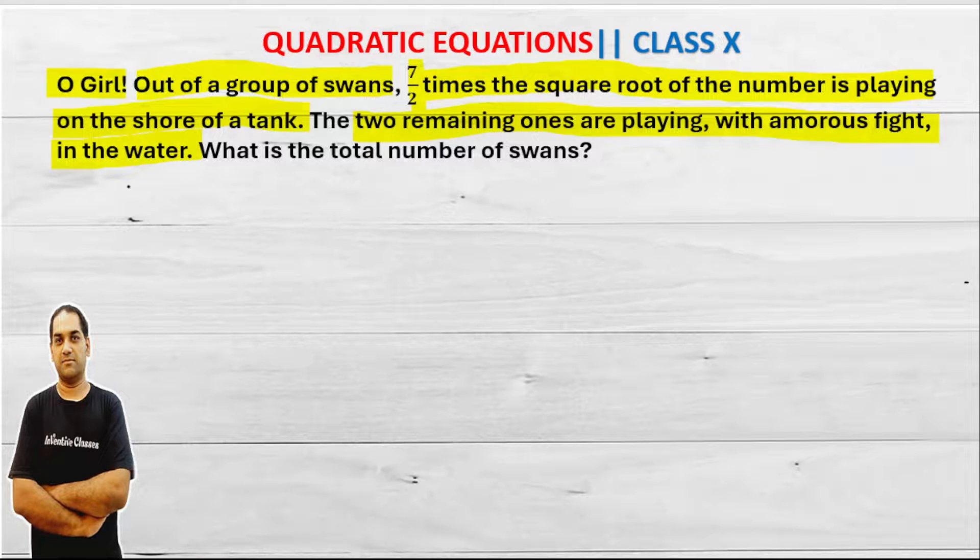If you have hundred swans, then among these, seven by two swans times if I take the square root of that number.